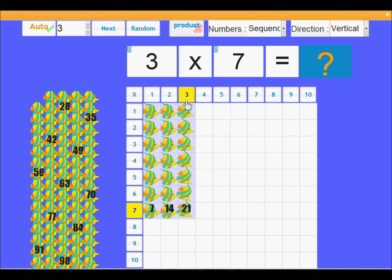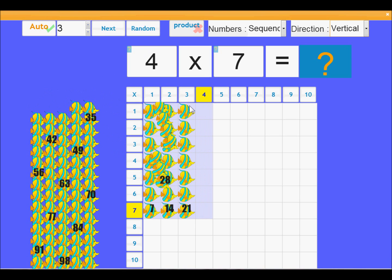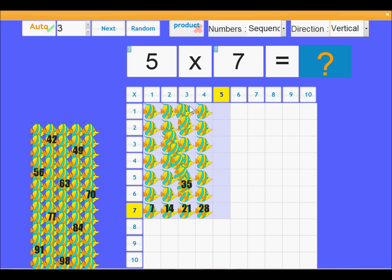So changing that direction, now we see the horizontal sequence, which now it's a 7 times table: 7, 14, 21, 28.